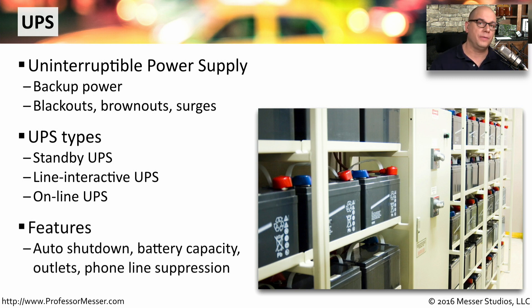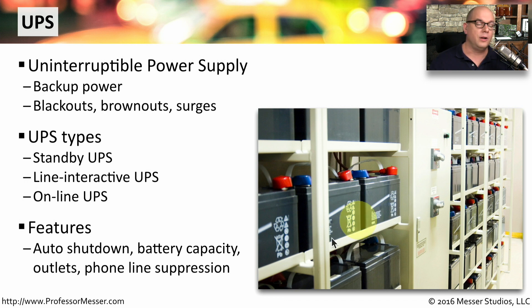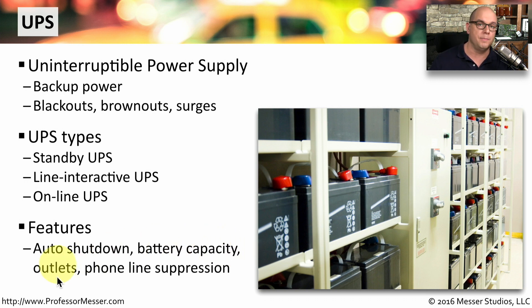Different UPS systems can also provide different capabilities. For example, a UPS may include an auto shutdown feature — when it goes to battery, it will tell your computer to shut down normally rather than abruptly cutting power. They might also have different battery capacities so they can stay on battery power for a longer period of time, a different number of outlets depending on the model, and some will have phone line or network line suppression to stop any power coming through those lines as well.